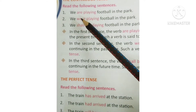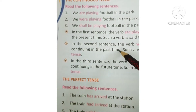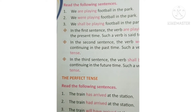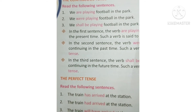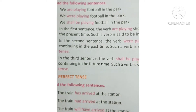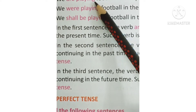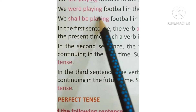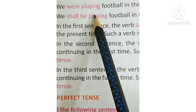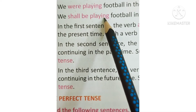We were playing football in the park mein, 'were playing' shows that the action was in continuous process in the past time. Past mein hum khel rahe the football park mein — us waqt continuation mein tha woh process. In the third sentence, 'shall be playing' shows that an action will be continuing in the future time — such a verb is said to be in the continuous tense. Continuous tense aap kaise pehchanoge: us mein ek '-ing' laga hota hai verb ke peeche. If it is 'are playing' then it is present continuous. If it is 'were playing' then it is past continuous. If it is 'shall be playing' or 'will be playing' then it is future continuous.